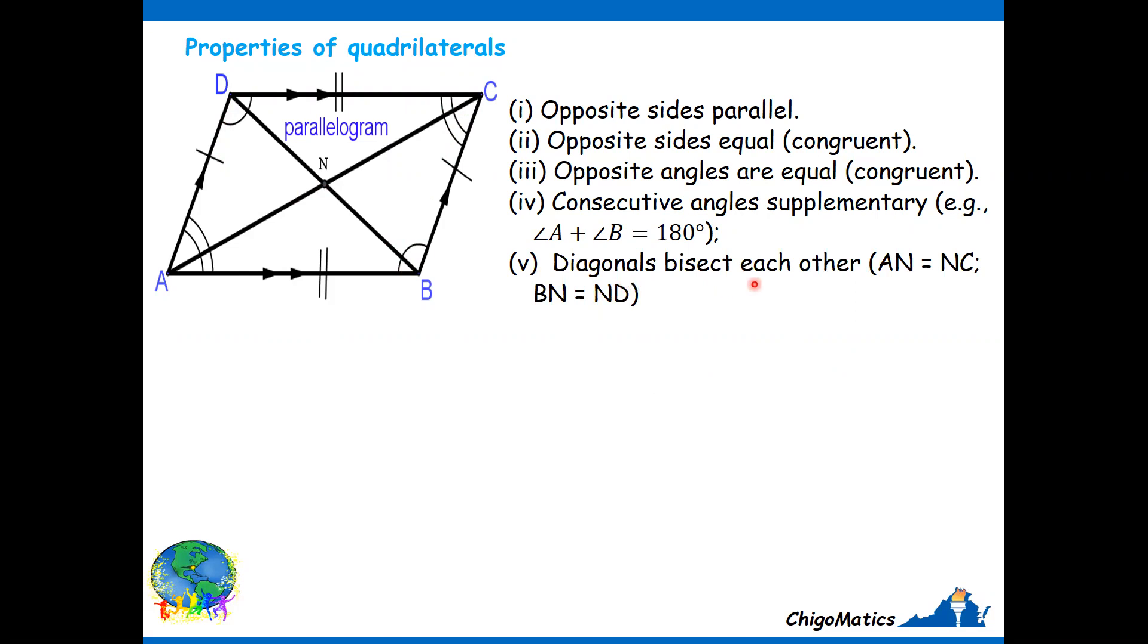Diagonals bisect each other. That means the diagonals AC and BD, they intersect at N. When you say bisect, that means they divide each other into equal parts. That means NC equals NA, and NB equals ND.